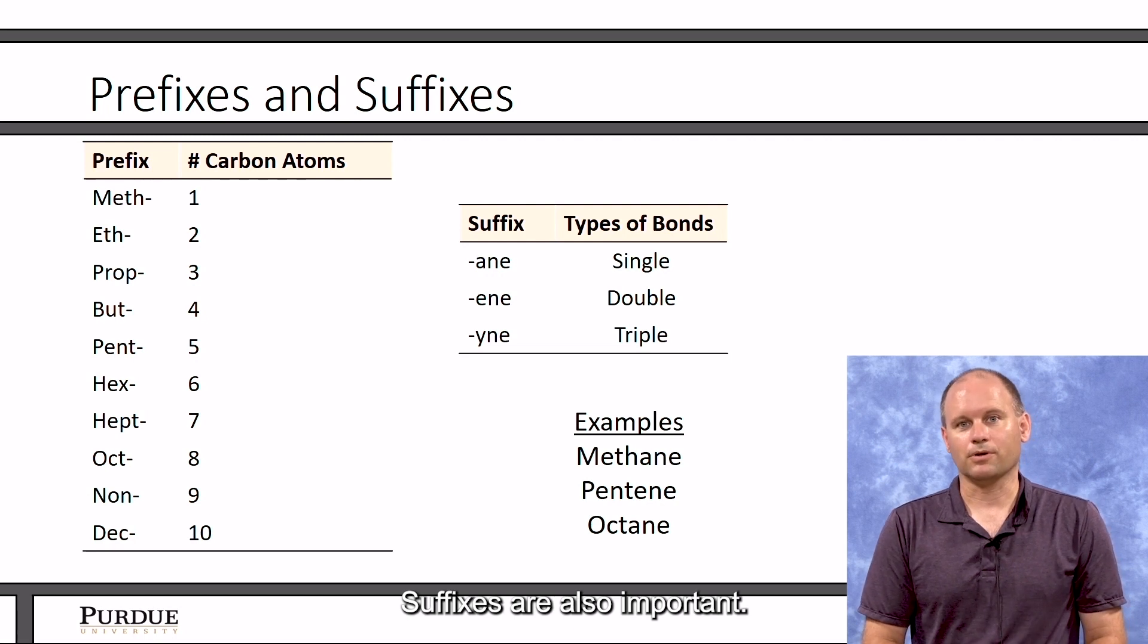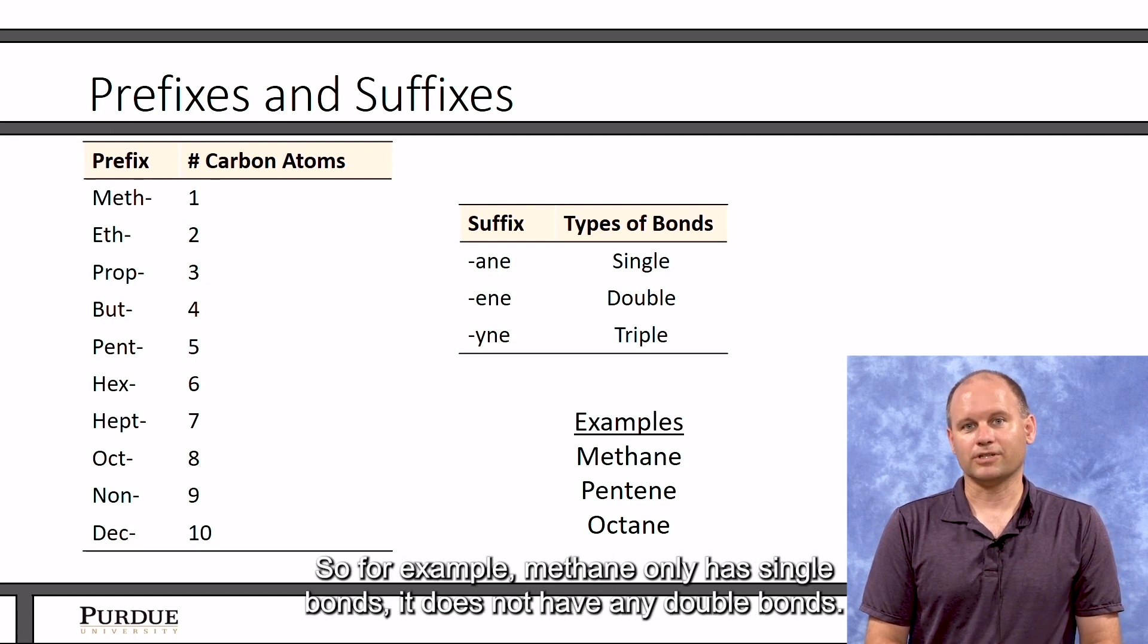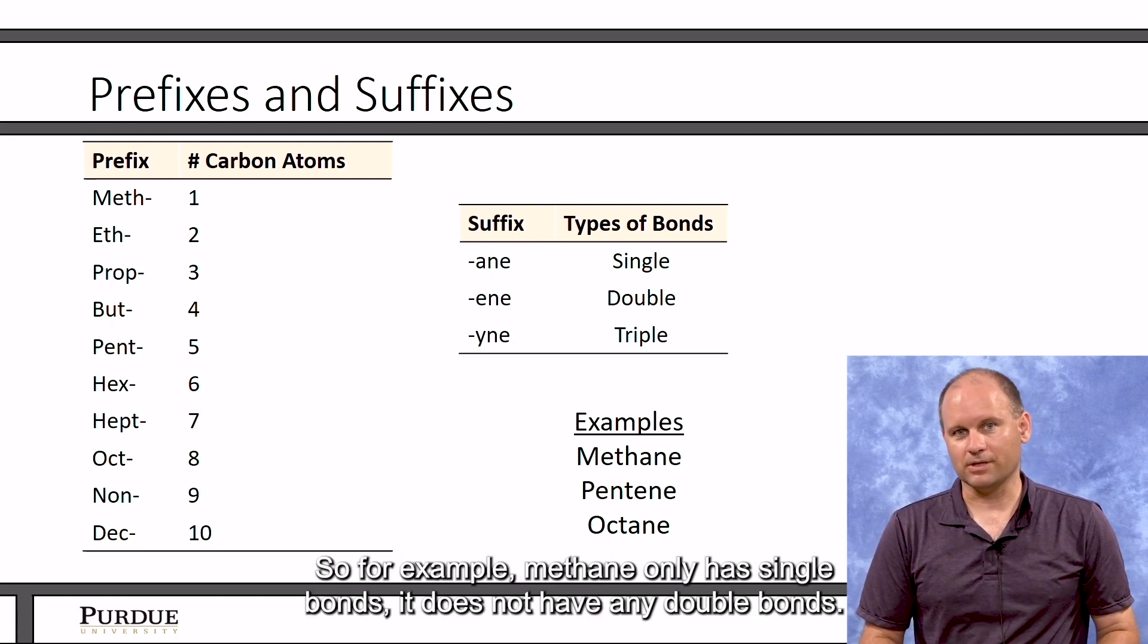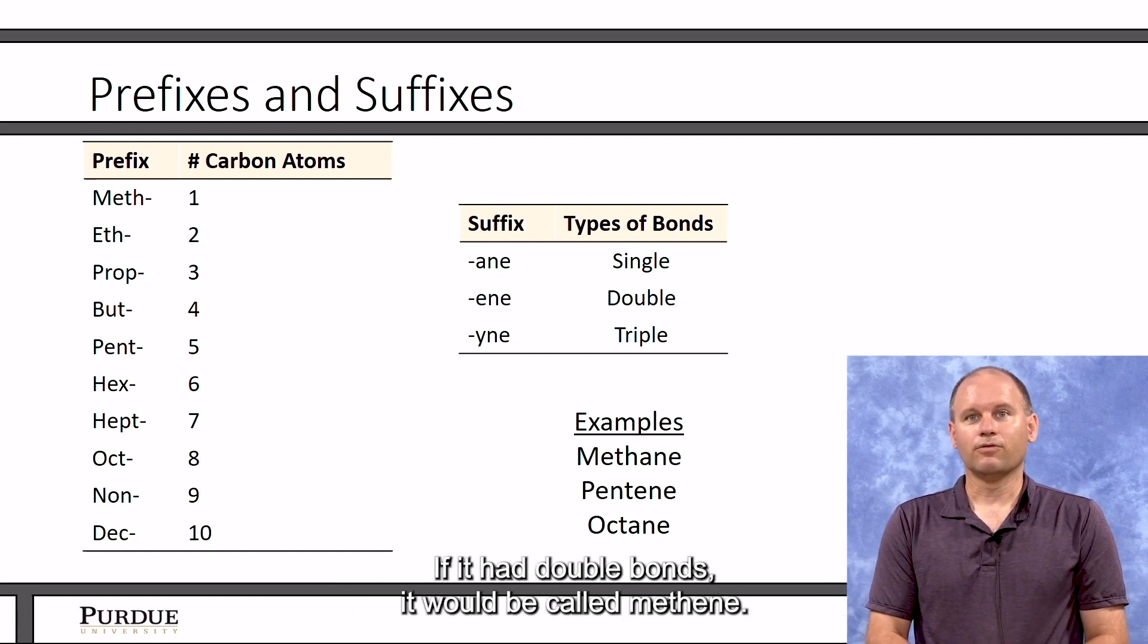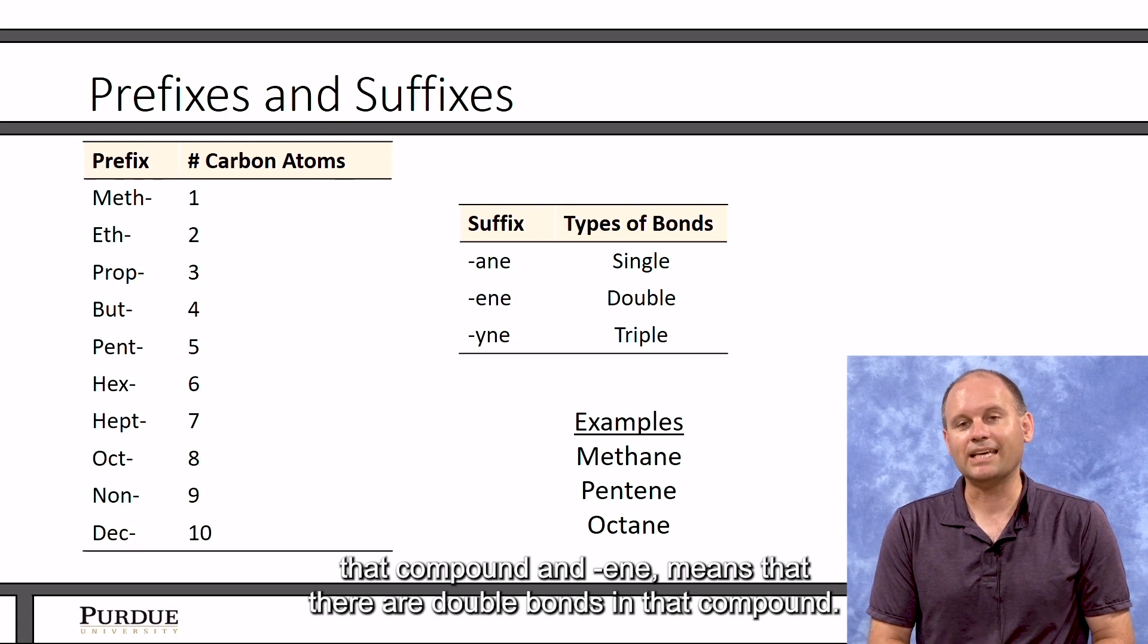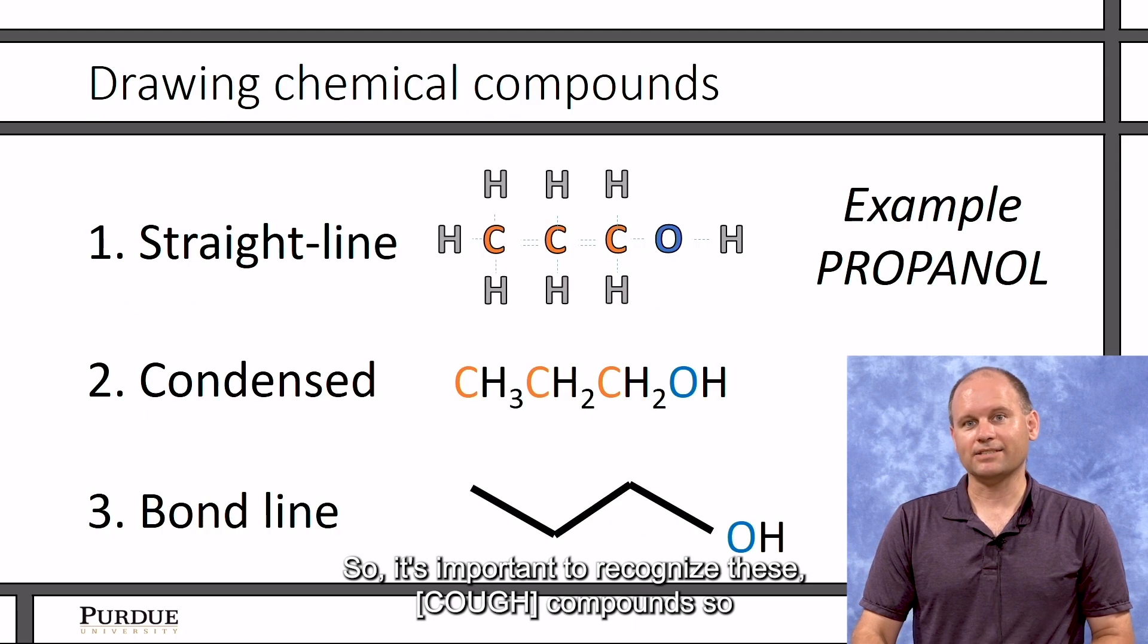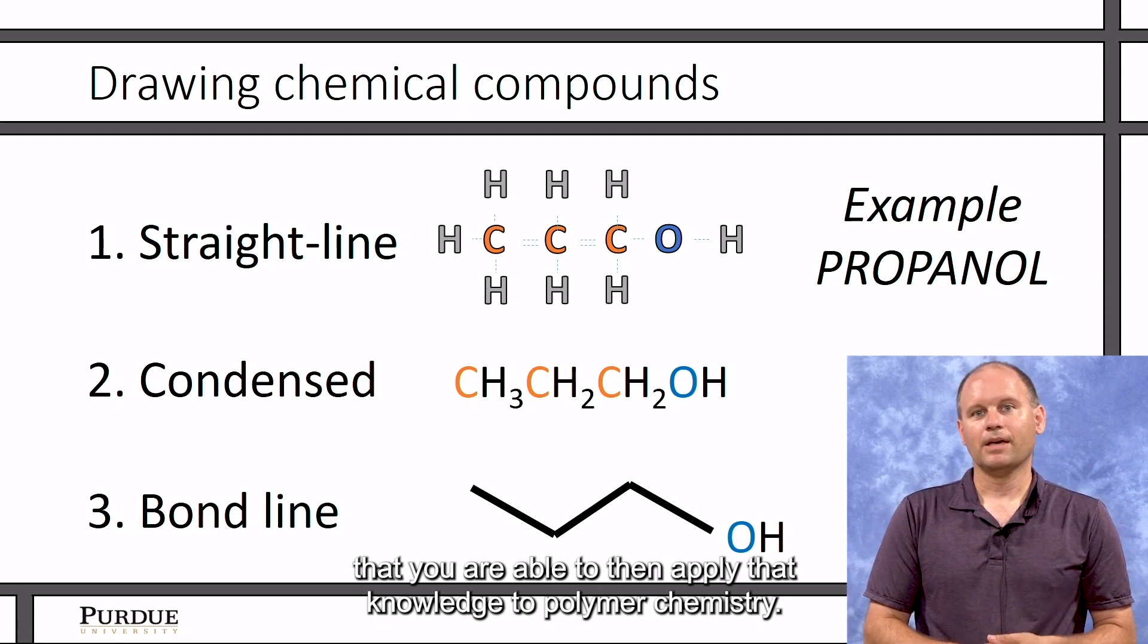Suffixes are also important. This tells you what types of bonds are present in that compound. For example, methane only has single bonds, doesn't have any double bonds. If it had double bonds, it would be called methene. For pentene, pent means that there's five carbon atoms in that compound, and ene means that there are double bonds in that compound. So it's important to recognize these compounds so that you're able to then apply that knowledge to polymer chemistry.